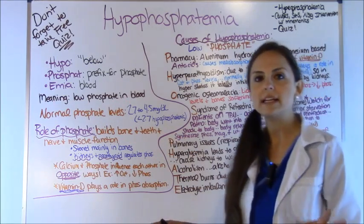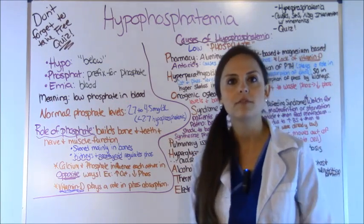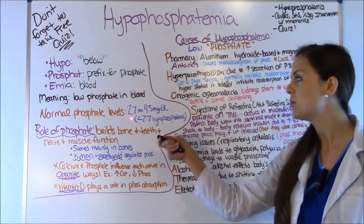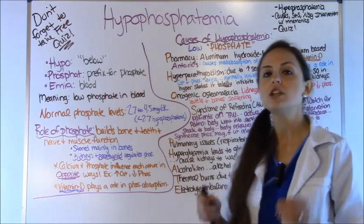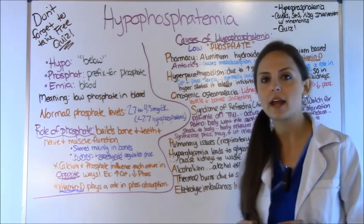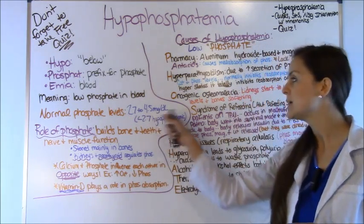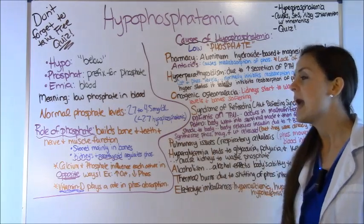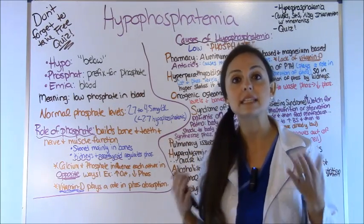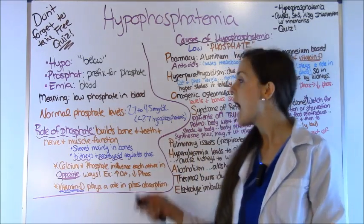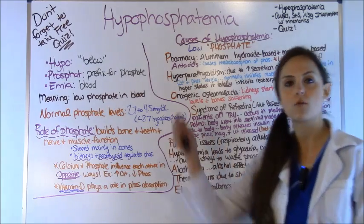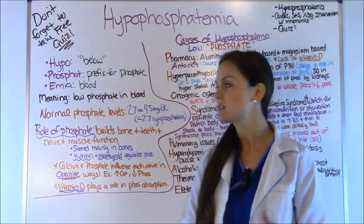So what is a normal phosphate level? It is 2.7 to 4.5 milligrams per deciliter, and anything less than 2.7 is considered hypophosphatemic — so low phosphate.